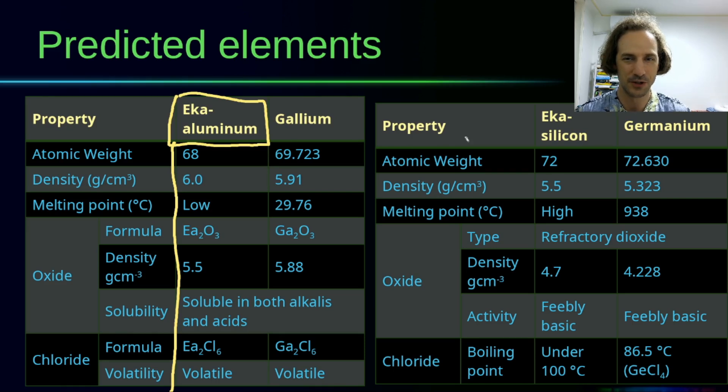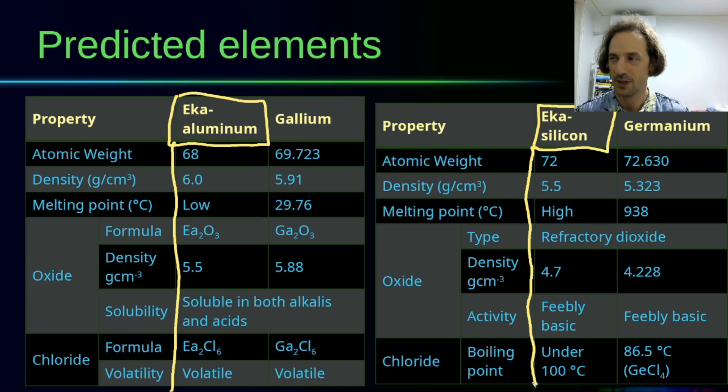For the element that would be under silicon and was not discovered back then, he named it eka-silicon, and these are the predicted properties. In science we like to make predictions because once we have a theory—here the theory is that the elements have their properties change periodically if we order them in the order of their atomic masses—based on that, Mendeleev could make predictions on the properties of these specific elements. After these elements have been discovered, most of their properties were similar enough to Mendeleev's predictions.